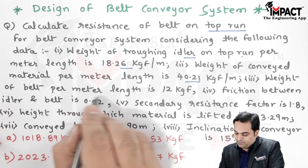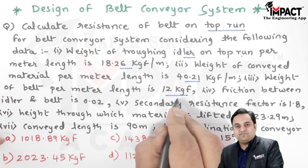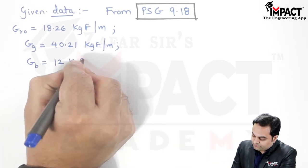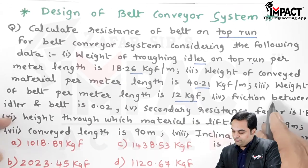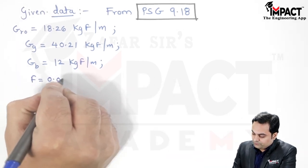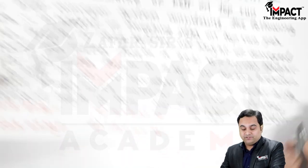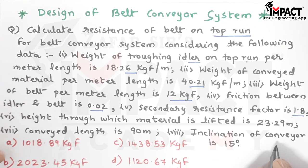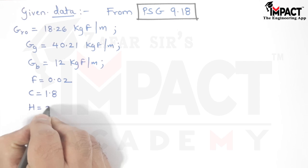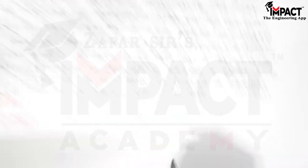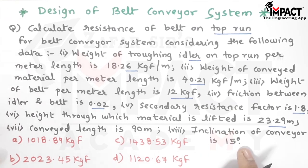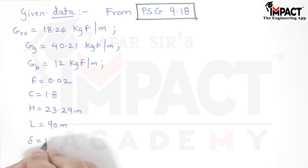Next, the weight of the belt per meter length, it is denoted as G suffix B, so 12 kgf per meter. Next, the friction between the idler and the belt is 0.02, so small f is given 0.02. Then secondary resistance factor is 1.8, denoted by capital C. Next, the height through which the material is lifted is 23.29 meter, which is capital H. Conveyed length is 90 meter, so the length of conveying is given. And last, the inclination of the conveyor is 15 degree, so delta is given as 15 degree.